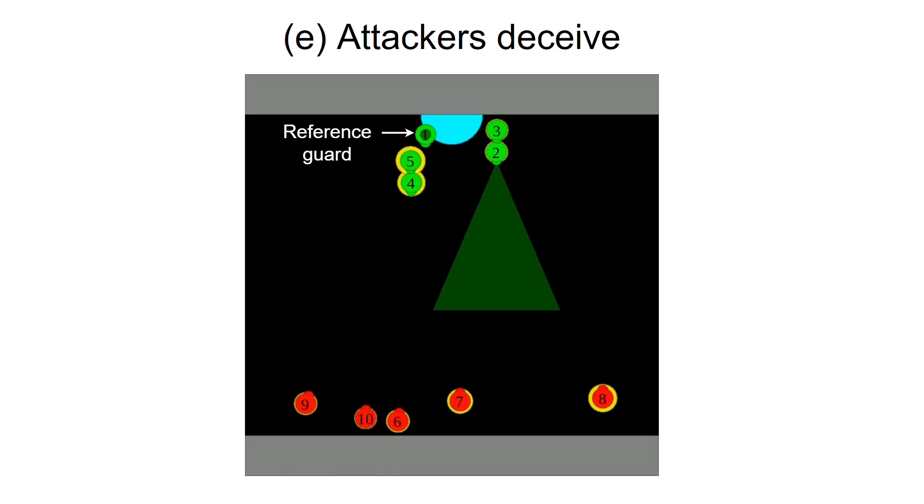We visualize the attention paid by one alive guard to all the other agents. This guard has a dark green dot at its center. All the other agents have yellow rings around them with the sizes of the rings being proportional to the attention values.